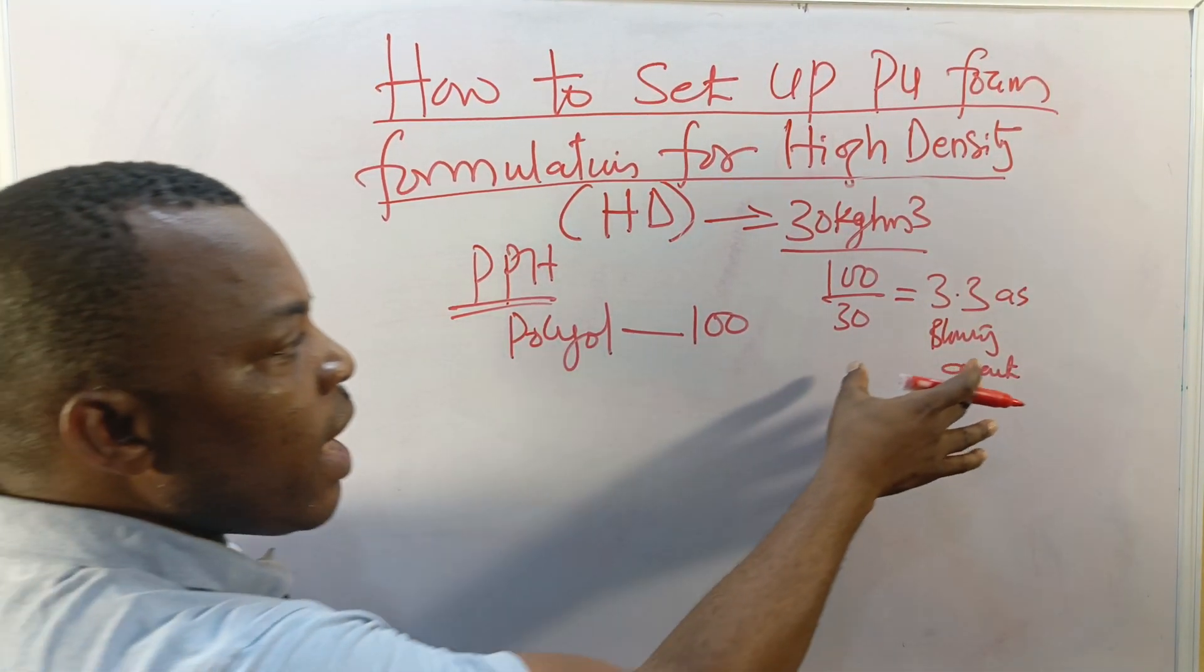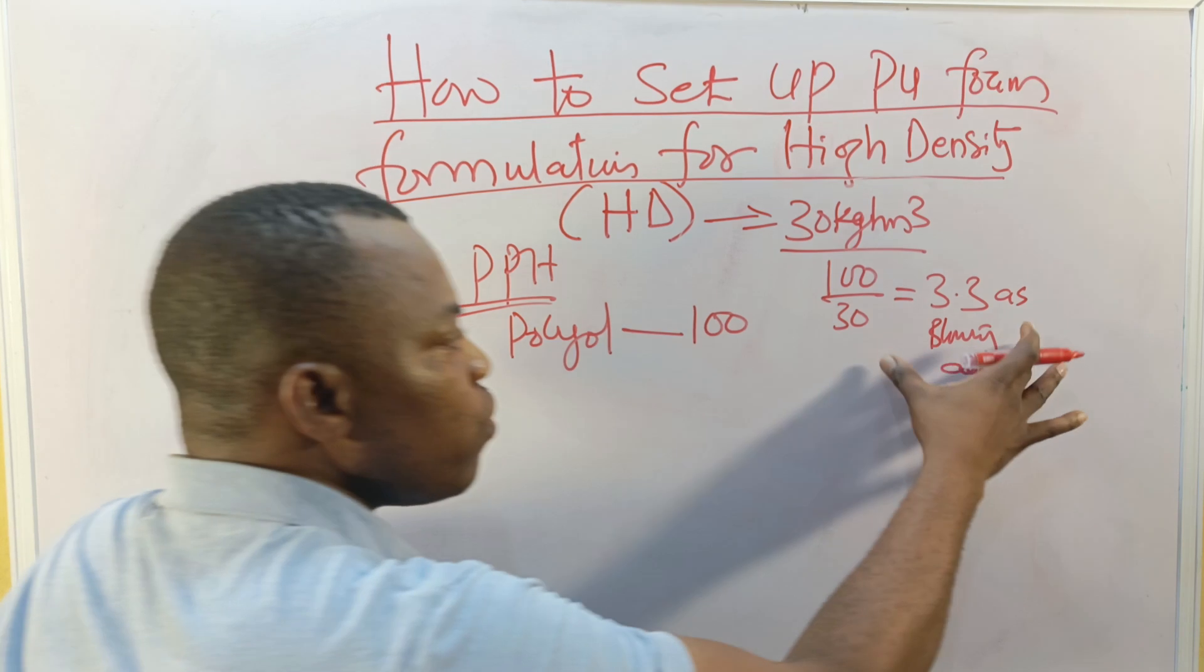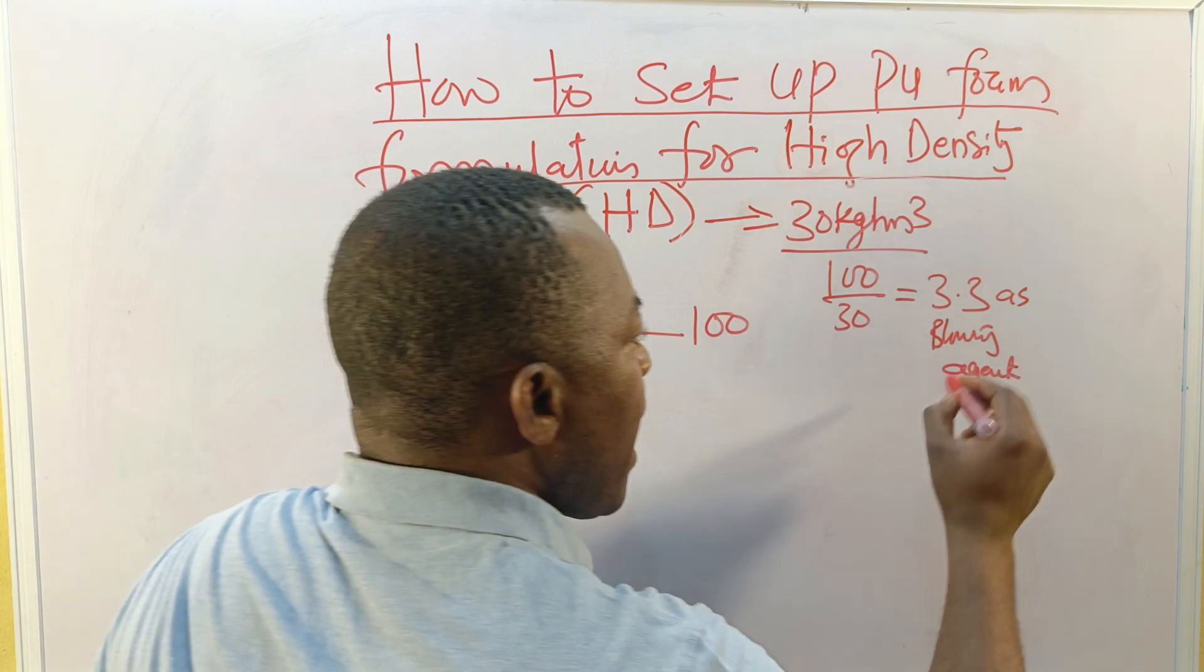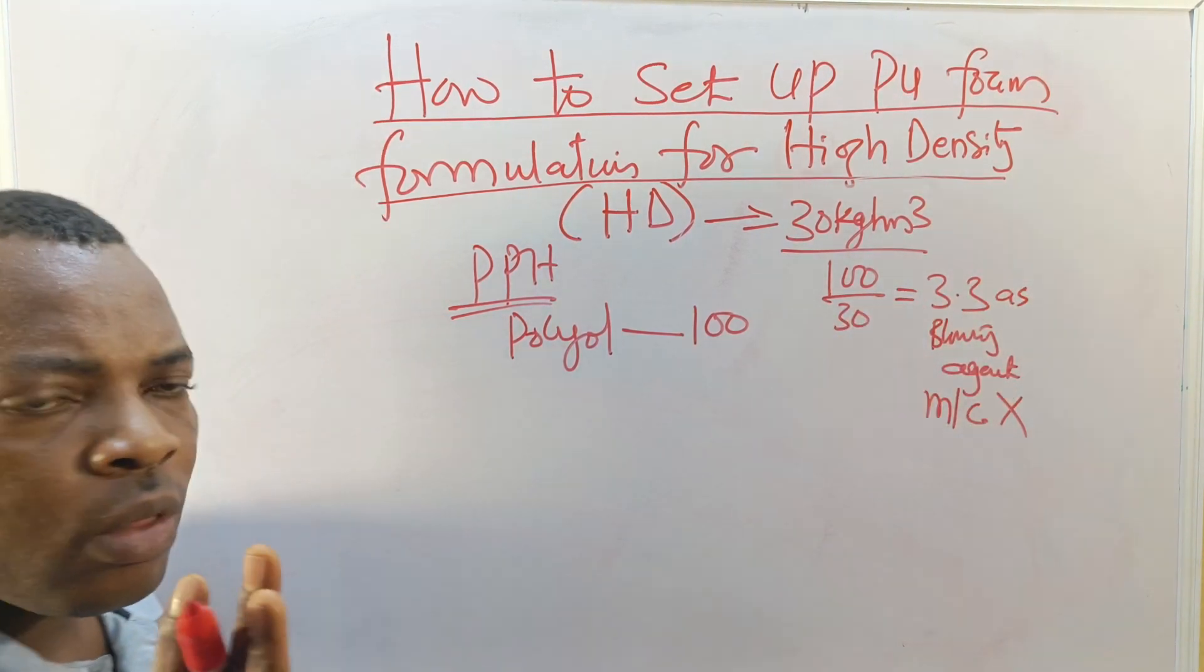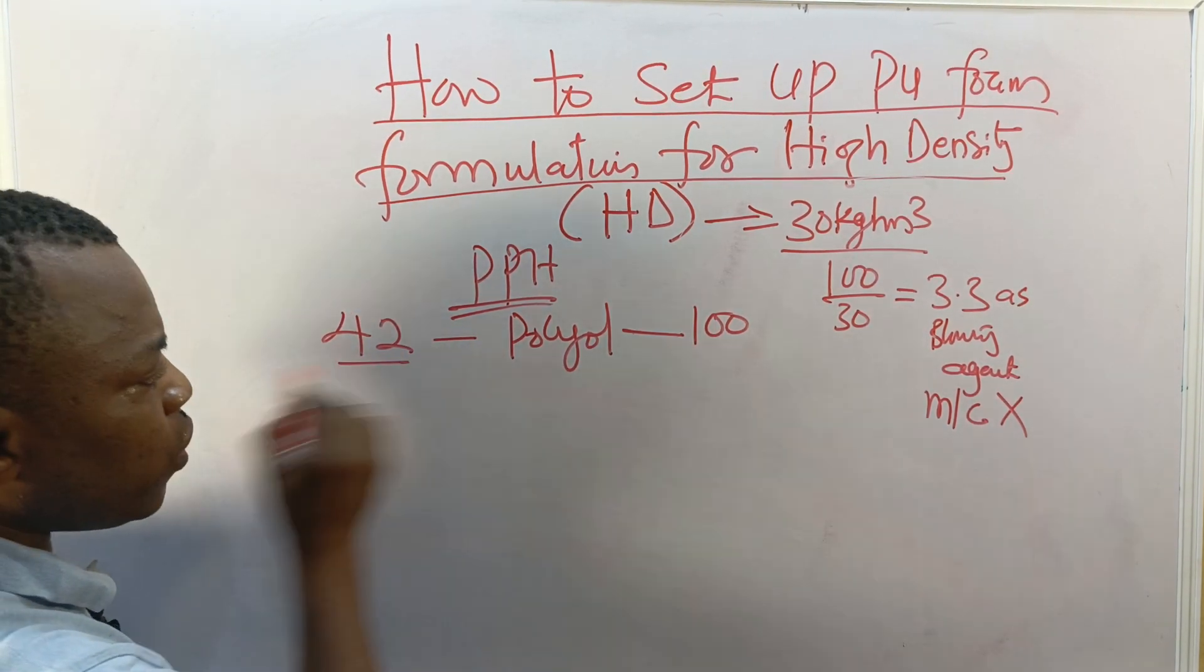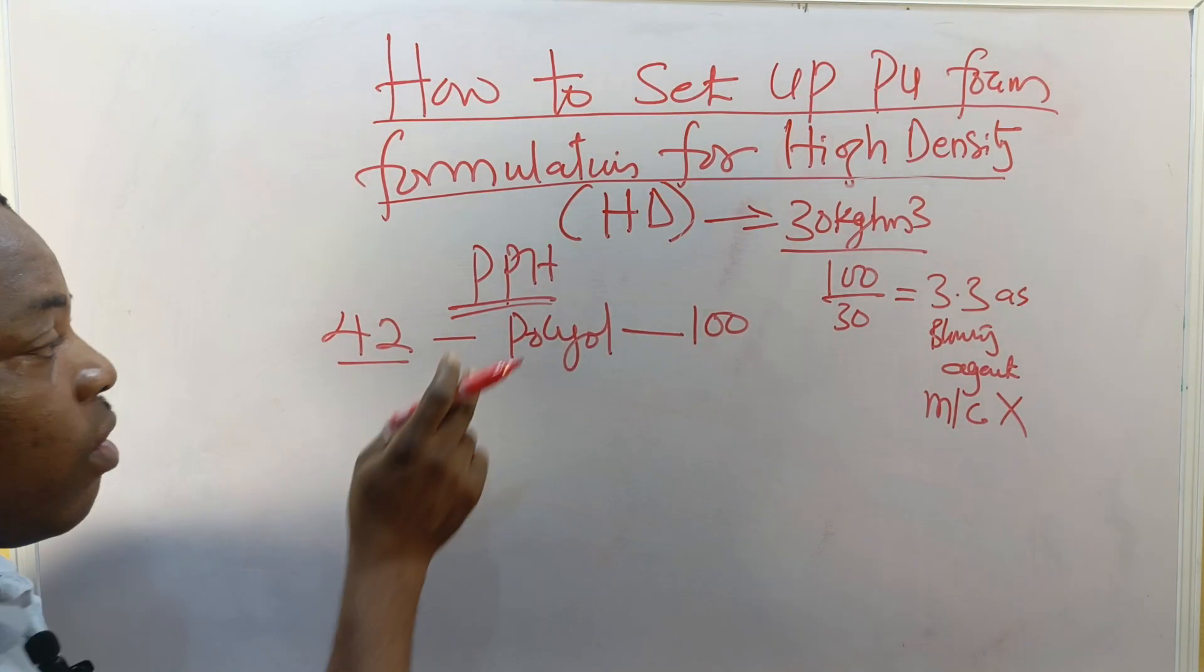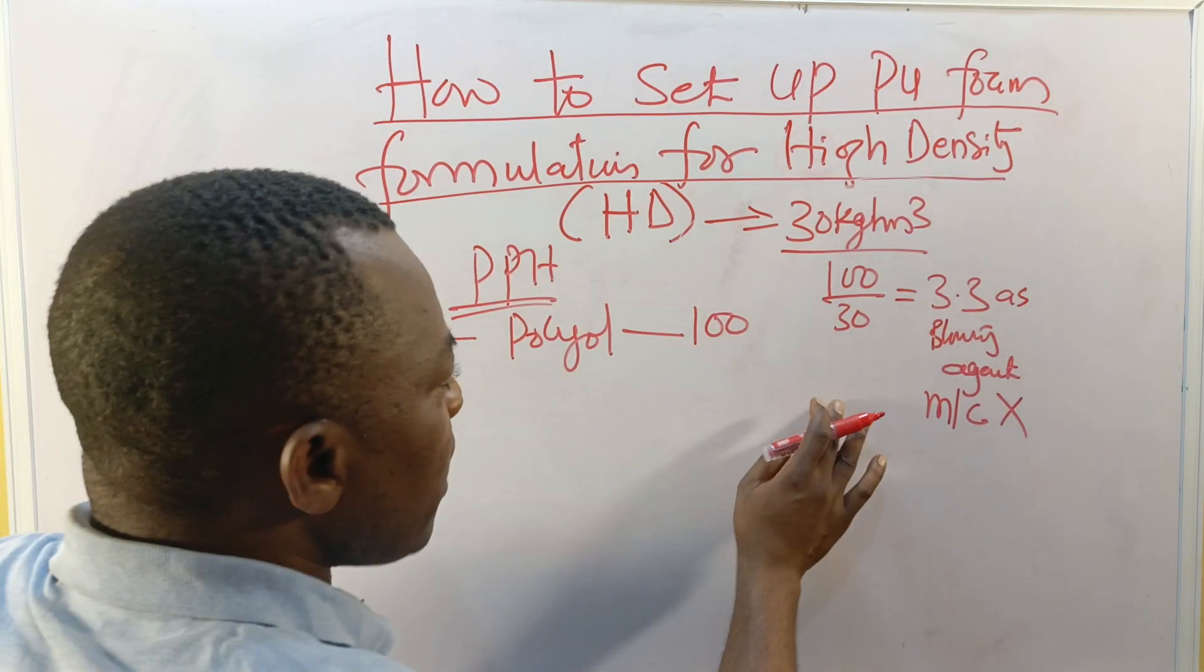In this blowing agent there are two ways. You may choose to use methylene chloride, you may not use it, but you will achieve the same 30 density if your formulation parameters is correct. Assuming I don't need MC, I'm going to use only water alone to blow this foam, taking into concentration the hydroxyl value of my polyol is 42.